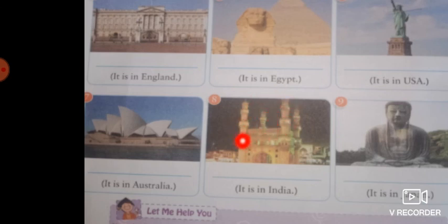The next monument is in India — it is in Hyderabad. It was built by Mohammed Quli Qutub Shah to celebrate the end of plague, and it lies near the bank of the river Musi in Hyderabad, India. Can you guess this very famous monument in Hyderabad?